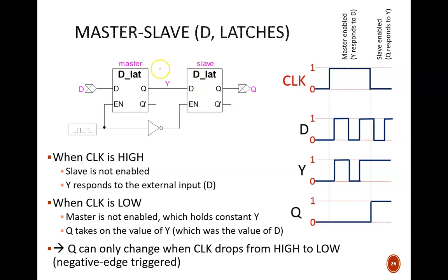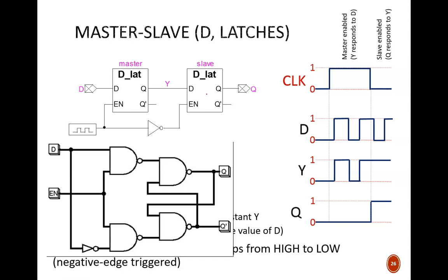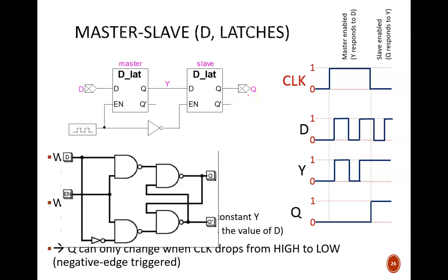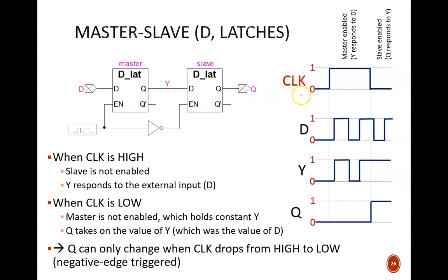A master-slave D flip-flop is shown here, made of a clock, a NOT gate, and two gated D latch devices. Recall that the gate-level schematic of a gated D latch looks like this. The idea is that the Q output of the latch will match the D input once the latch is enabled. Let's examine this timing diagram, which shows the input D, intermediate signal Y, and final output Q.